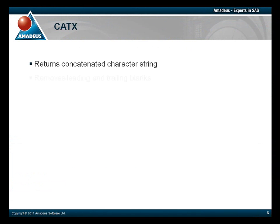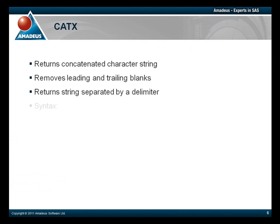Finally, the fourth function that we're going to look at is the CATX function. The CATX function is a very useful function and reduces the amount of coding considerably. The function is used when the user wants to concatenate more than one string together, removing the leading and trailing blanks in each string, but then separating the strings using a specified delimiter. The syntax for the CATX function is slightly different to the other three functions, where the first argument is the delimiter to be used, then following this are the variables or strings to concatenate together.